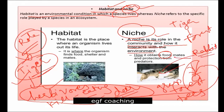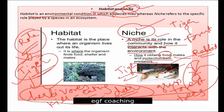Niche also includes mating — they will mate with each other — and protection from predators. For example, suppose the predator is a tiger. So how is the fox saving itself from the tiger? That is also part of its niche.